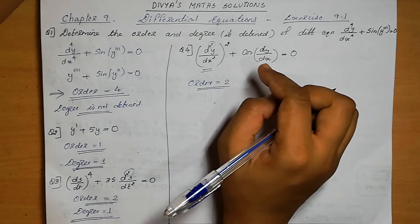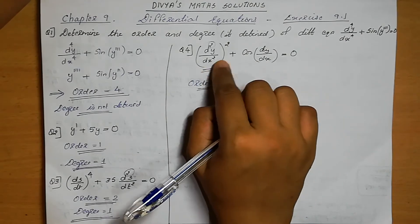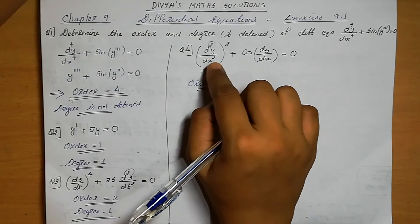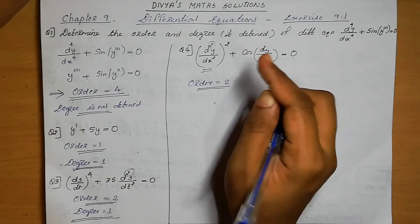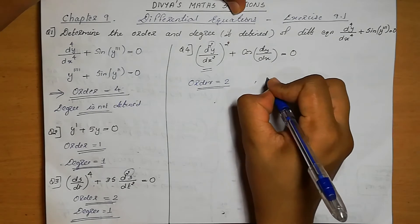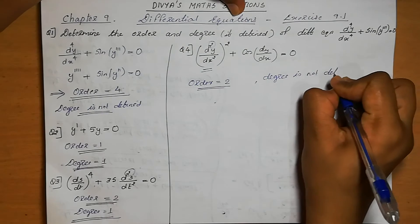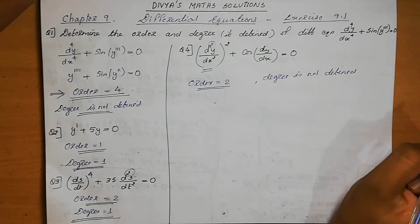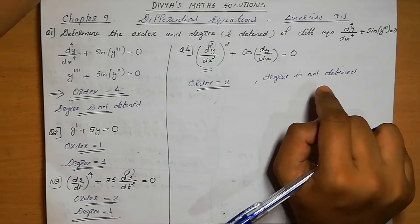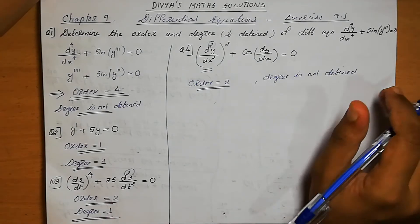Now, this differential equation contains cos(dy/dx), so it is not in the form of a polynomial equation in its derivatives. Therefore, the degree is not defined. The degree can only be determined if the equation is in polynomial form.